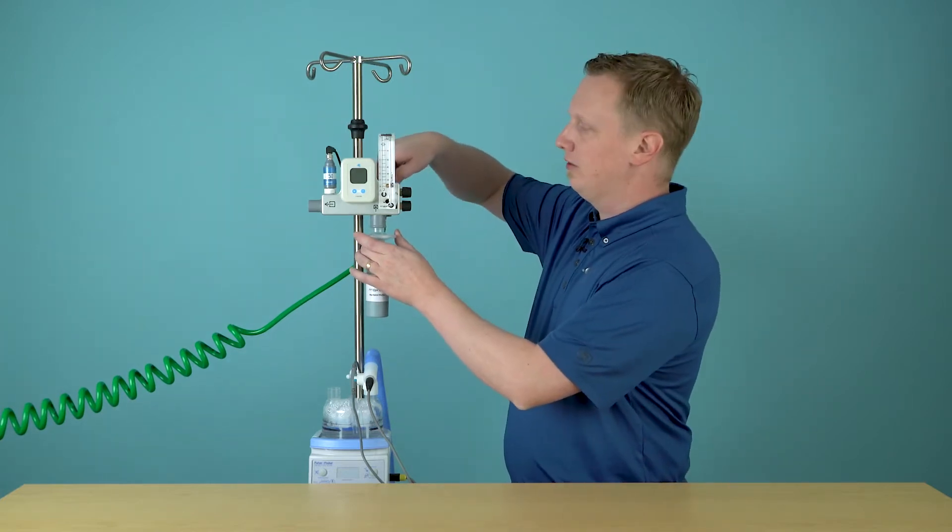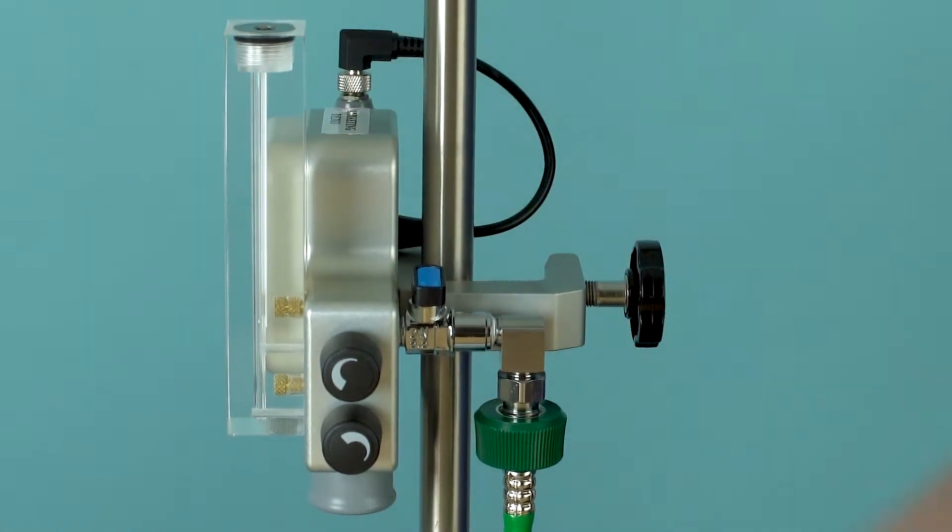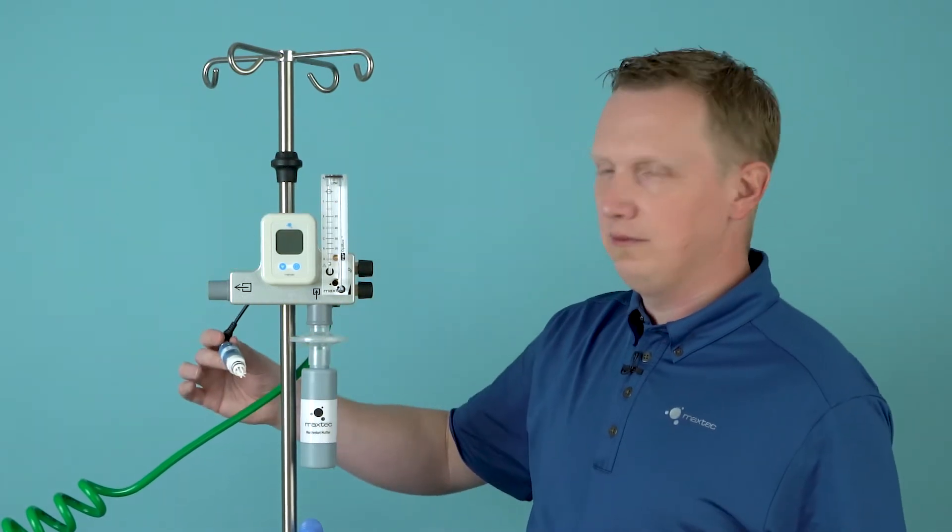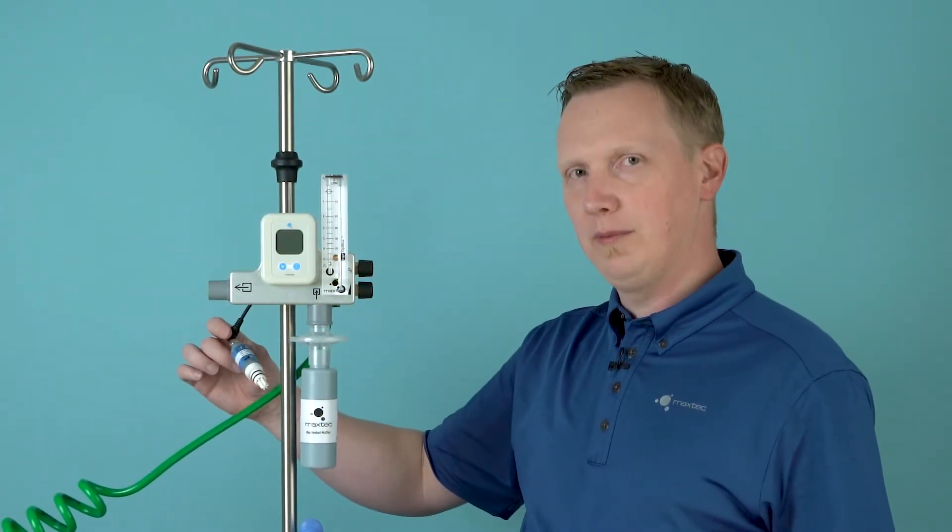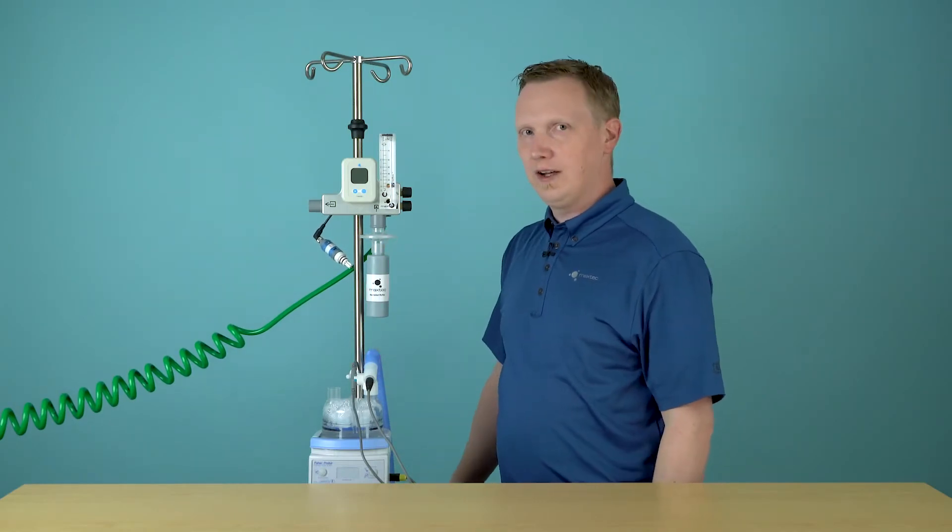First thing you'll want to do is turn off the oxygen supply using the valve on the back of the device. Next remove the sensor from the Max Venturi and just let it hang out here for a couple of minutes to let any oxygen that may still be residual inside the device dissipate.